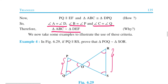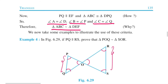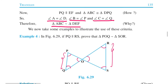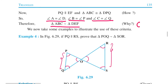Now, angle A equals angle D, angle B equals angle P, and angle C equals angle Q. So by AAA criteria, triangle ABC is similar to triangle DEF. All three angles became equal.